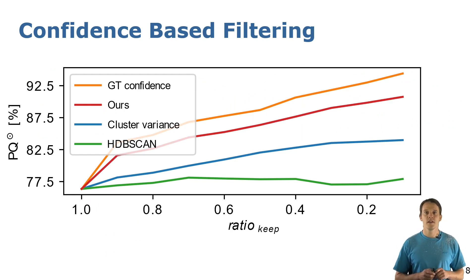As you can see here, our predicted confidence is better suited for filtering out imprecise instances than the baselines. The more predicted instances you discard, the higher gets the precision of the remaining instances.